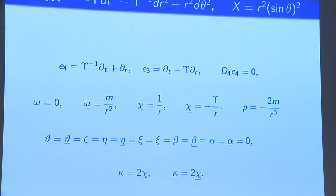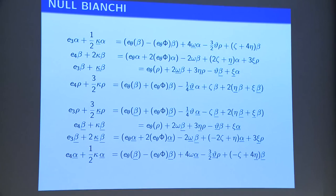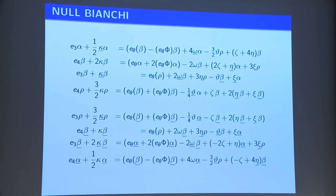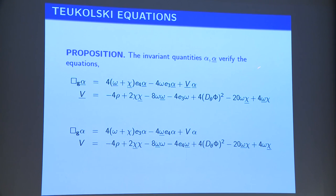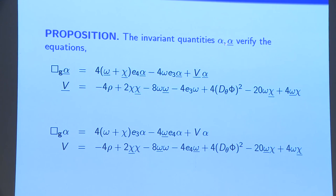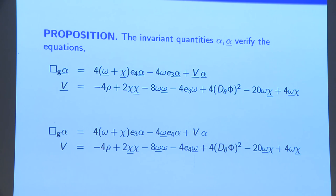Going back to the Teukolsky equations, which are now scalar: alpha and alpha-bar are scalars, and they satisfy the Teukolsky equations — a standard wave equation in Schwarzschild with terms involving derivatives of alpha-bar on the right-hand side. These are invariant up to O(epsilon squared). You can easily see this equation is not conservative, so there is not much you can do at this level. The idea is to find a good quantity that linearizes the only non-trivial component of curvature — the one close to rho_Kerr.